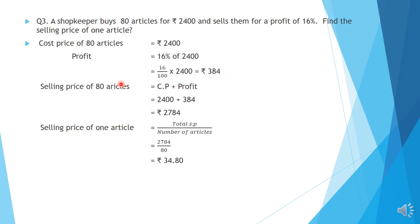Now we find the selling price. Selling price equals CP plus profit: Rs. 2400 plus Rs. 384 equals Rs. 2784. This is the selling price of 80 articles. Selling price of one article equals total SP divided by number of articles: Rs. 2784 divided by 80, which gives Rs. 34.80. This is the selling price of one article.